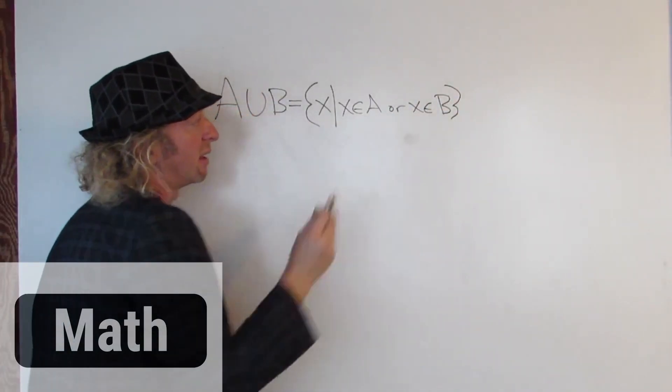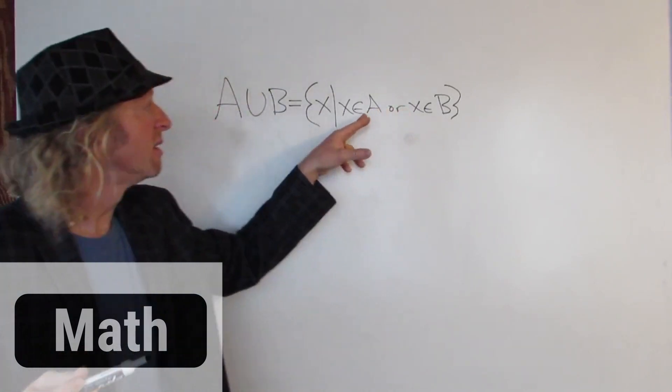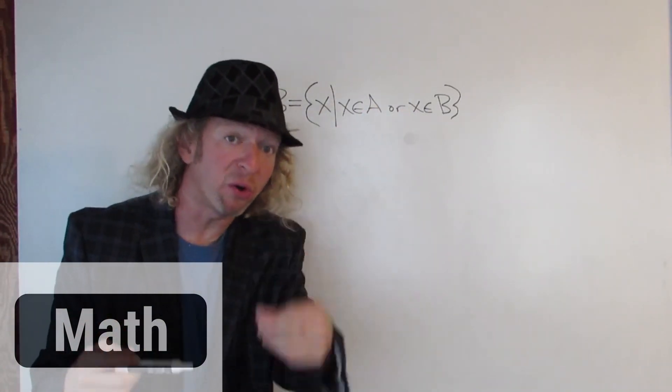It's important to keep in mind that OR in mathematics is not like OR in English, right? This means x is in A or x is in B or x is in both sets.